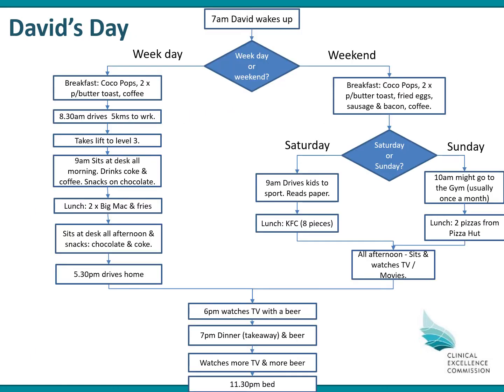Back to David — we've flow charted his typical weekday. He wakes up at seven and has cocoa pops, two pieces of peanut butter toast, and coffee for breakfast. At 8:30 he drives to work five kilometres away, parks, takes the lift to level three, and by nine he's sitting at his desk. He sits all morning drinking Coke and coffee and snacking on chocolate. At lunch he buys two Big Macs and fries, comes back, sits all afternoon snacking on chocolate and Coke. By 5:30 he drives home. In the evening he watches TV and has his first beer at six, has takeaway dinner and another beer at seven, then more TV and more beer before going to bed at 11:30.